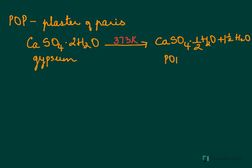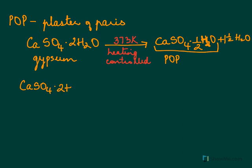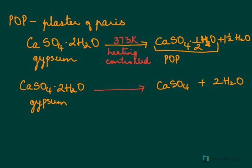This product — CaSO4·½H2O — is POP, or calcium sulphate hemihydrate. Care should be taken that heating is controlled and the temperature does not go above 373 Kelvin. If the temperature goes too high, gypsum loses all its water of crystallization, giving CaSO4 plus 2H2O. This product is called burnt plaster, which does not have the properties of POP.